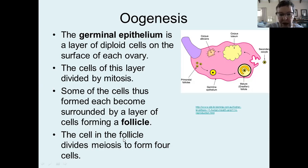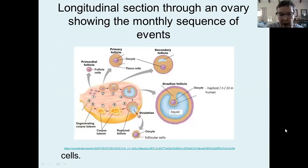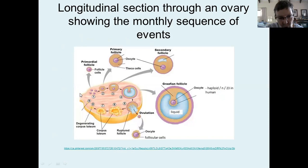What you need to realize is that these processes, although they're all being shown in the same diagram, are not actually happening at the same time. You would never find an ovary that has all of these things going on simultaneously. There would always be primary follicles, but there wouldn't be a Graafian follicle and a corpus luteum at the same time.